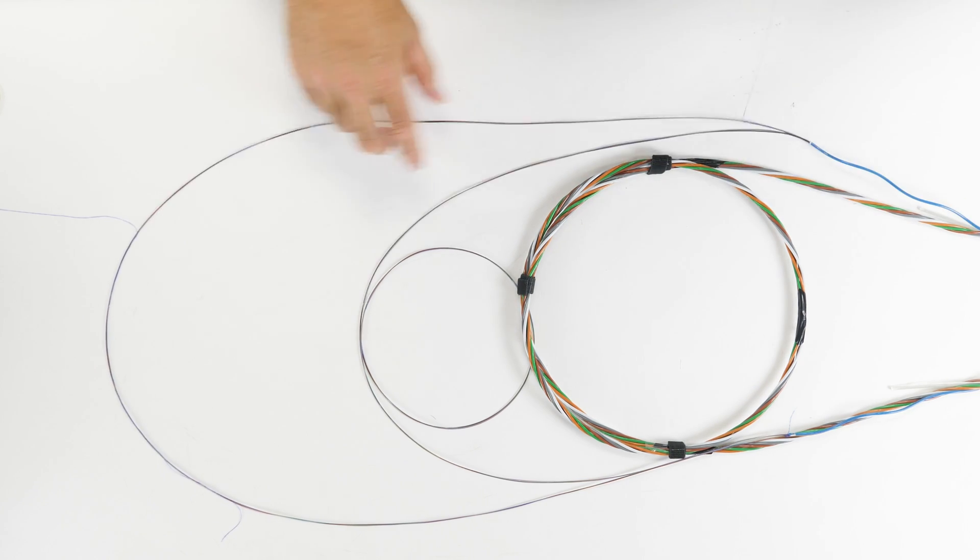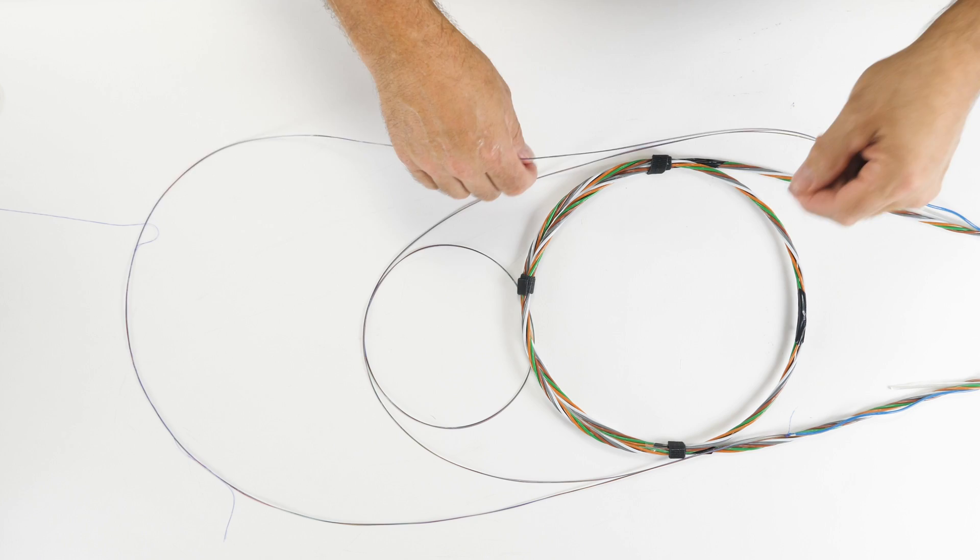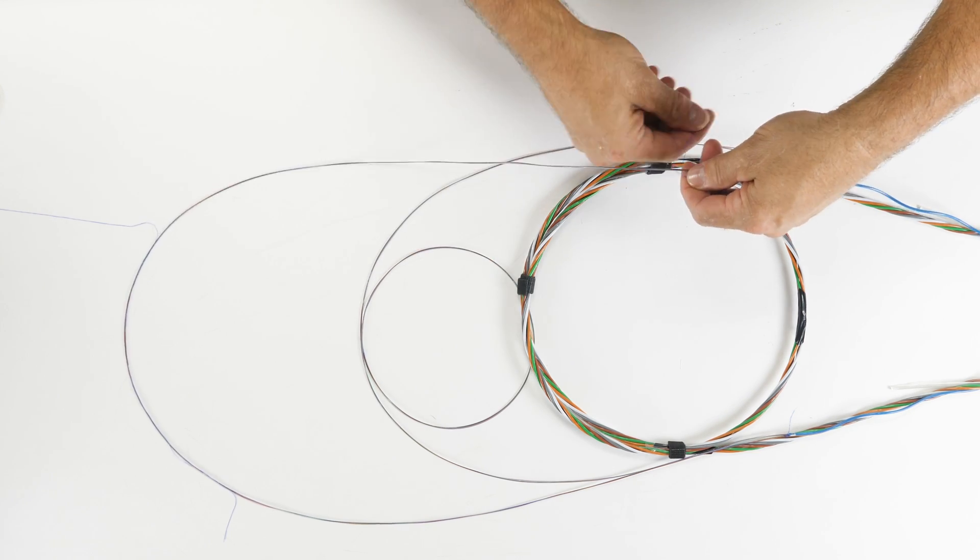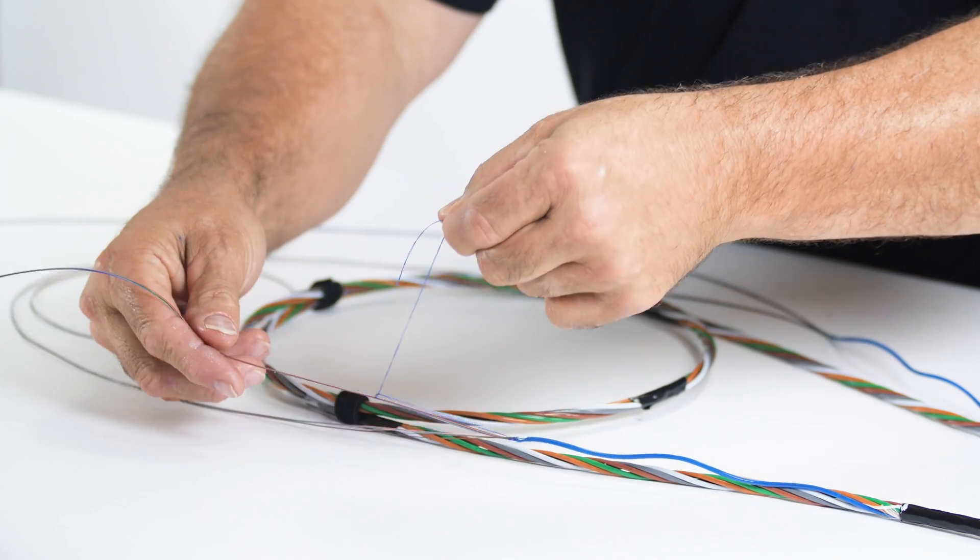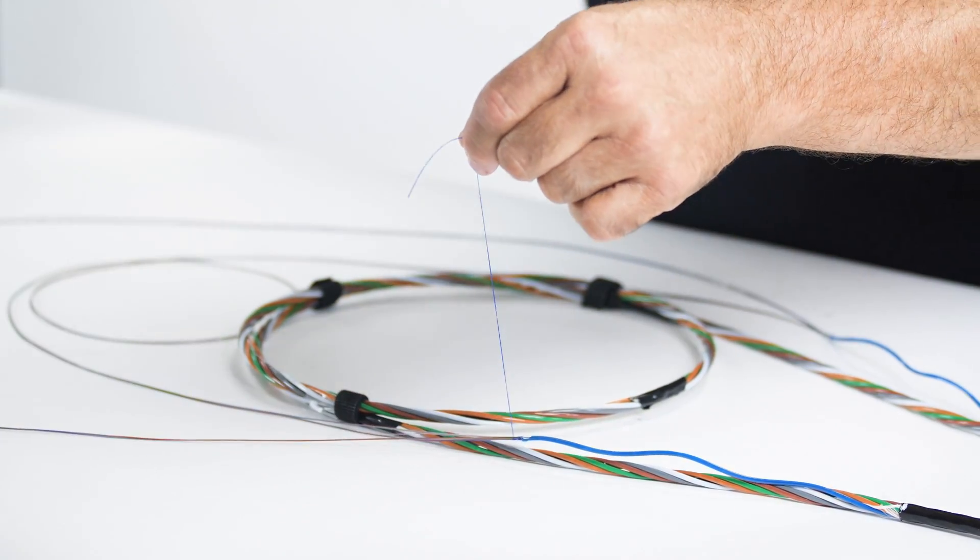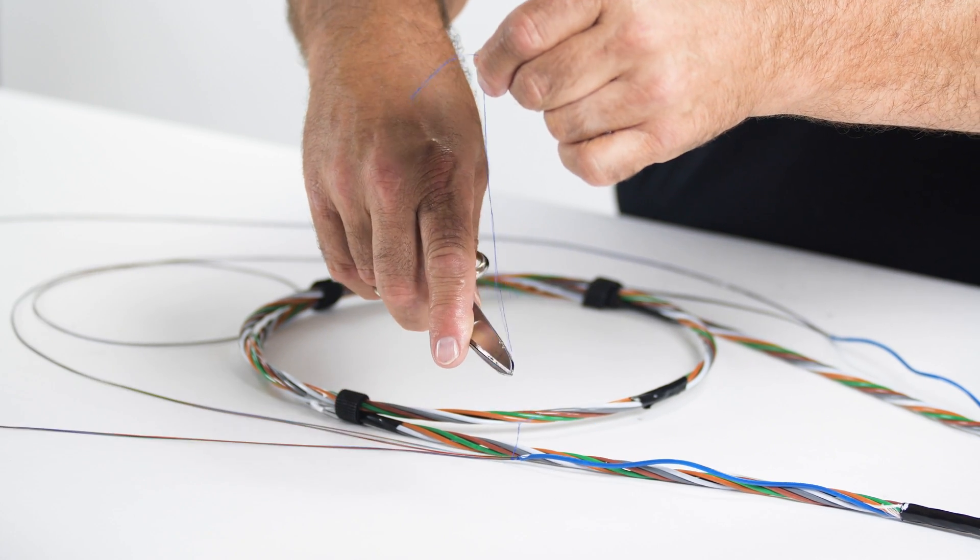With the binders, perform a half hitch loop around the fiber group approximately 6 times to identify the group. Make sure not to pull the binder loops too tightly. Repeat the half hitch method on each side of the fiber group. Remove the remaining binders from within the fiber grouping.